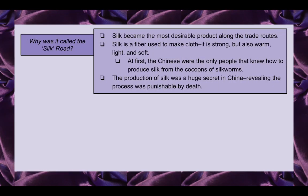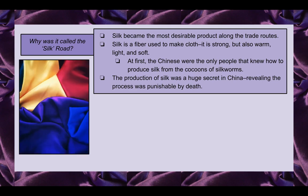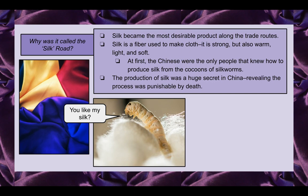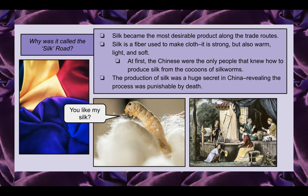So why was it called the Silk Road? Silk became the most desirable product along the trade routes. Silk is a fiber used to make cloth — it's strong, but at the same time warm, light, and soft. At first, the Chinese were the only people who knew how to produce silk from the cocoons of silkworms. The production of silk was a huge secret in China — so secret, in fact, that revealing the process was punishable by death.